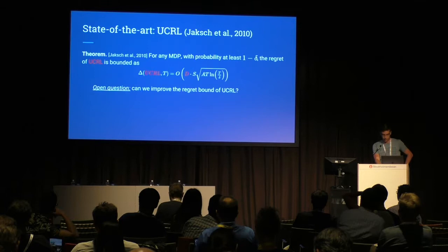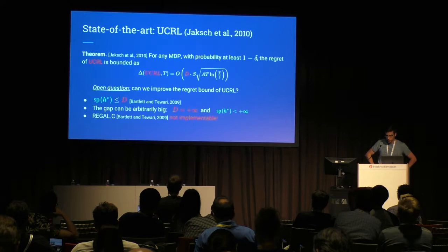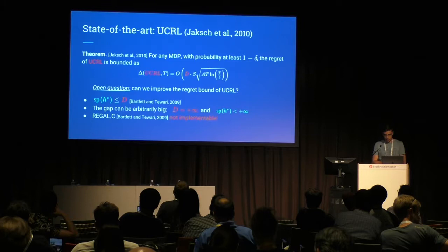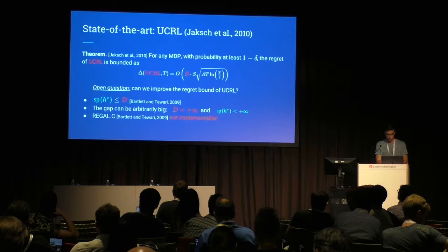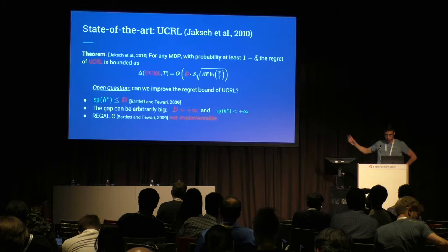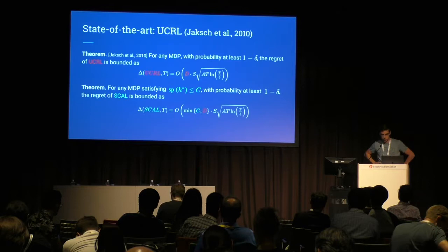It has been an open question whether we can improve this bound. The work of Bartlett and Tewari in 2009 suggested a nice alternative: the span of the optimal bias, which is always bounded by D, as proved in 2009. It also takes into account the reward function, as opposed to the diameter, which is purely based on transition dynamics.